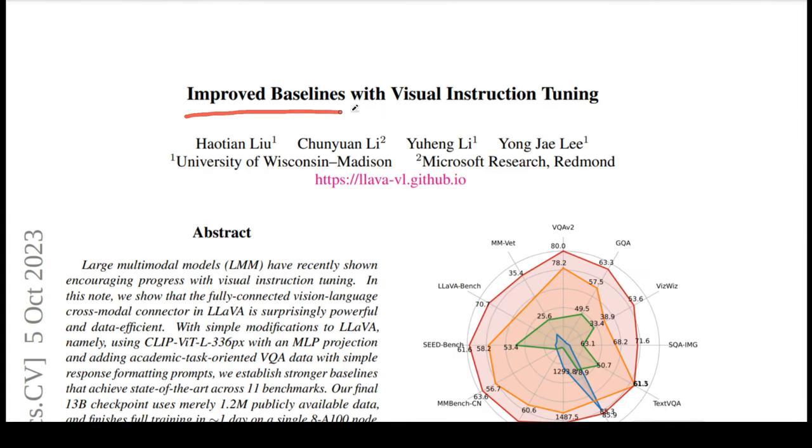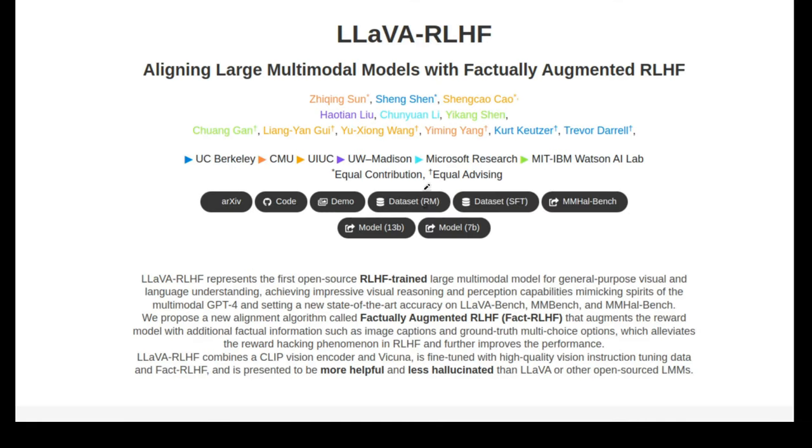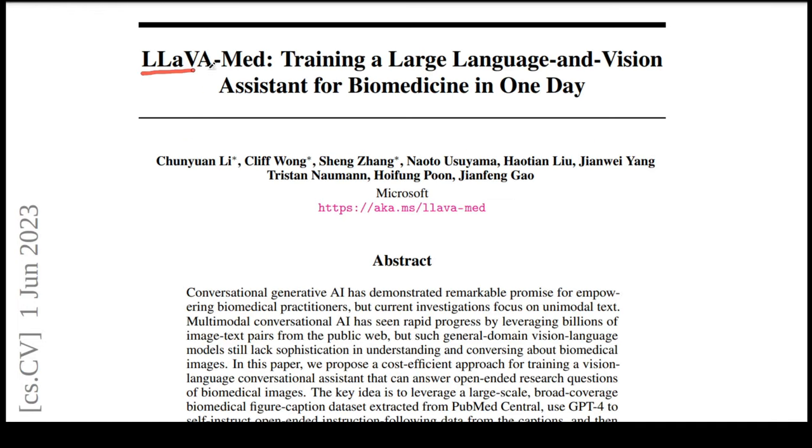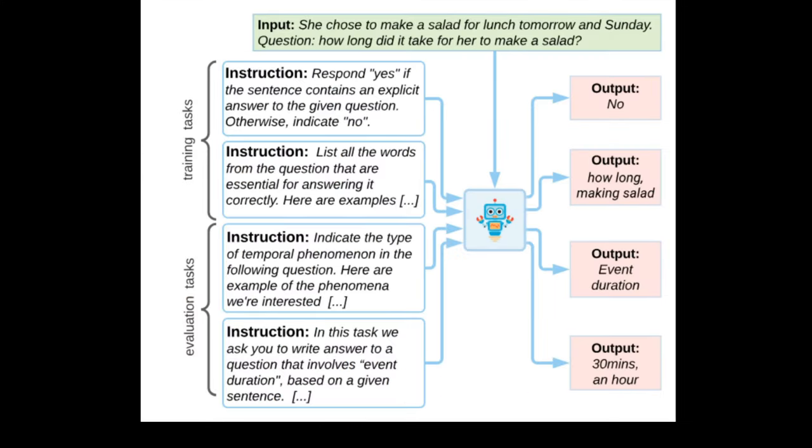LAWA 1.5 is titled Improved Baselines with Visual Instruction Tuning. There are also other papers in the series like LAWA RLHF, which introduce the concept of Factually Augmented RLHF. This work was followed by LAWA Med that trained a LAWA model-based conversational agent to answer open-ended research questions on biomedical images. So without further ado, let's jump into the very first LAWA paper.